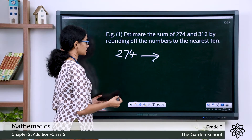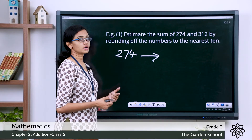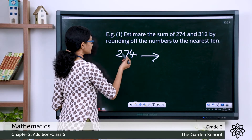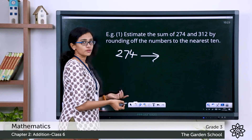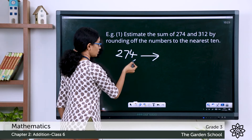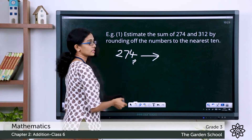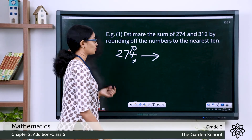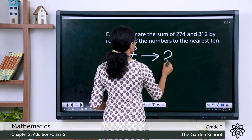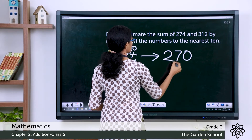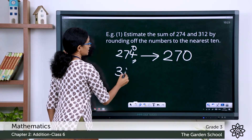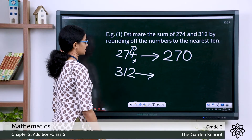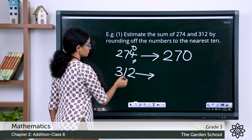We have to check the digit to the right of the tens digit, and see if it is less than five, or five or more. The digit to the right of the rounded digit is four, so let's keep the rounded digit as it is and change the ones digit to zero. That gives you 270.